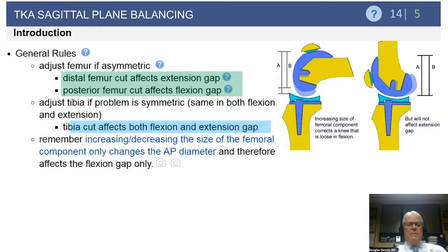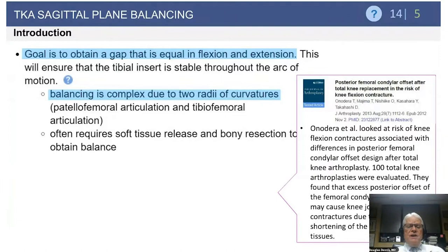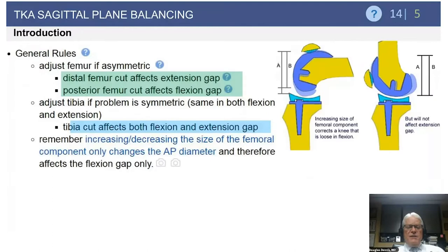Let's talk about balancing. Our goal is to obtain equal flexion and extension gaps to assure that the knee is stable throughout the entire range of flexion. Balancing is complex because you have to consider two radii of curvature in both the patellofemoral articulation and the tibiofemoral articulation.